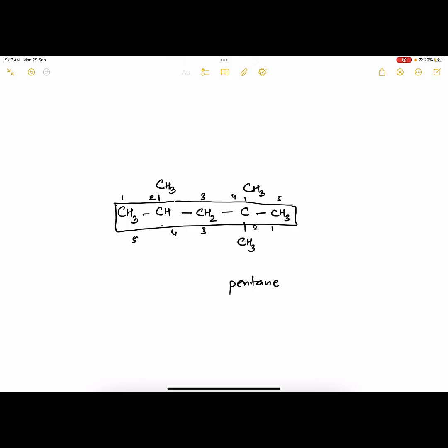If you count from right to left, the positions will be 2, 2, and 4 for the methyl groups. So take the lower numbers.